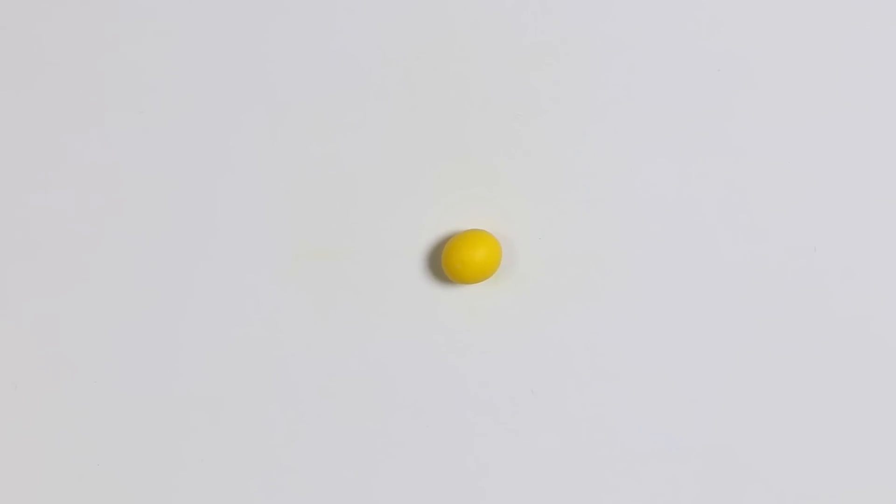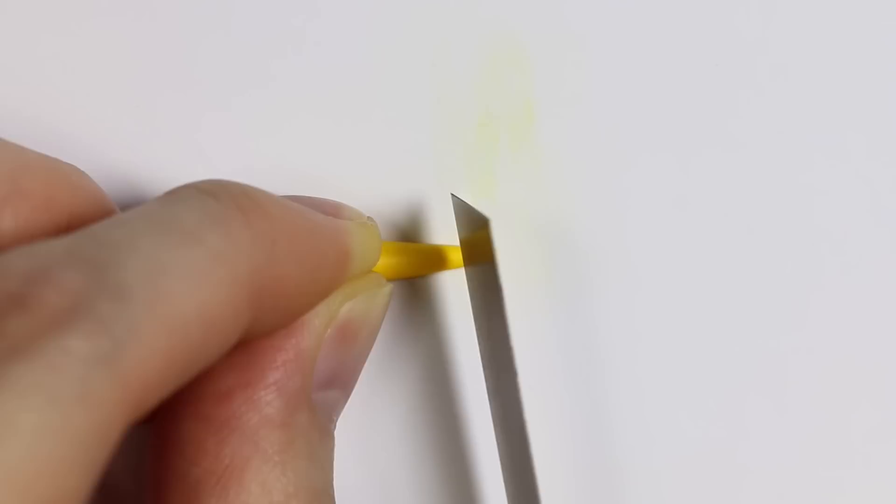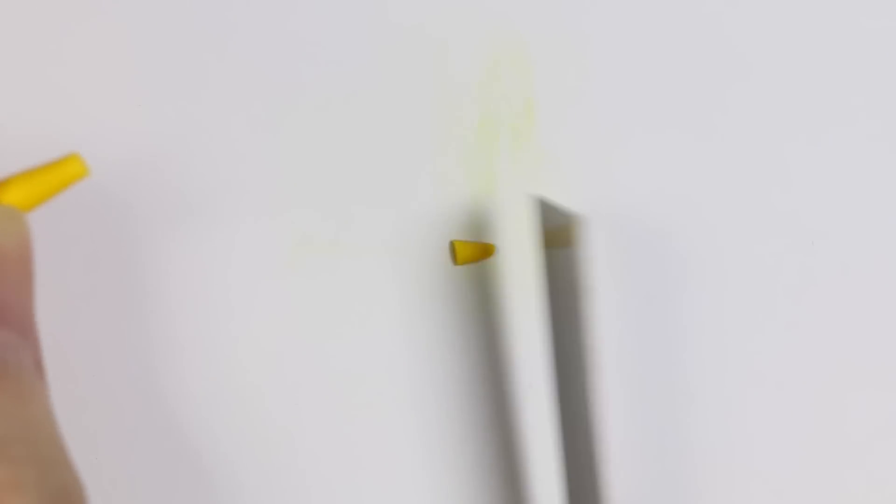For the tip of the bottle, I'm going to roll out some yellow clay into a cone shape and cut off the two ends. And I'm going to attach that onto my little lid.